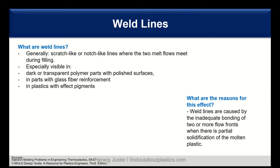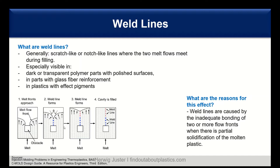Looking at the reasons, here is a picture from the Cmold design guide. You can see an obstacle with the injection point where the melt flows in, fills the cavity, and reaches the obstacle. With different flow speeds around the obstacle, the two melt fronts meet again after it and form a weld line or a melt line. The difference between a weld line and a melt line is the angle where they meet: below 135 degrees it is considered a weld line, and above 135 degrees it is a melt line. With a weld line you have lower quality compared to a melt line.